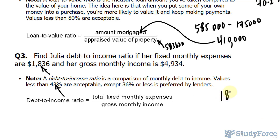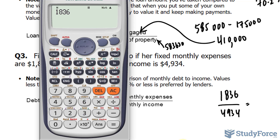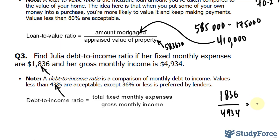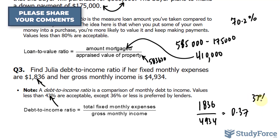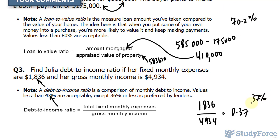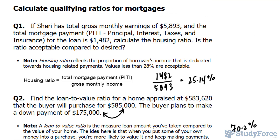So $1,836 divided by $4,934 gives us a ratio of 0.37, or 37%. This is a little higher than most lenders' comfort zone, but it would be acceptable in this case. So there you have it — three different measures that banks consider before you are qualified for a mortgage on your home.